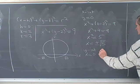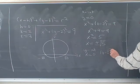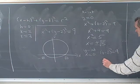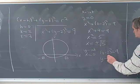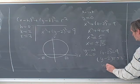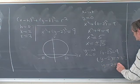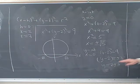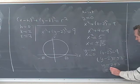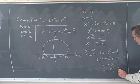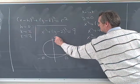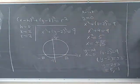The y-intercepts occur when x equals 0. When x equals 0, we have y minus 2 squared equals 9. The square is already complete, so we take square roots: y minus 2 equals plus or minus 3, or y equals 2 plus or minus 3. That means 2 plus 3 equals 5, or 2 minus 3 equals negative 1. So the y-intercepts are at 5 and negative 1.